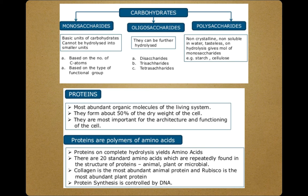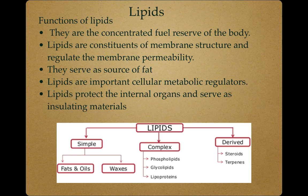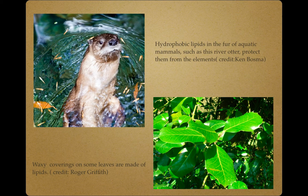Another abundant organic molecules of the living system are proteins. Proteins are polymers of amino acids, which play an important role in the architecture and functioning of the cell. Another macromolecule group is the lipids. These are organic substances which are relatively insoluble in water but soluble in organic solvents like alcohol and ether. They are also called the chief concentrated storage form of energy, constituting about 3.5% of the cell content. We can find some hydrophobic lipids in the fur of aquatic mammals such as the river otter, which serve as their protection, and in the waxy covering of leaves of some plants.